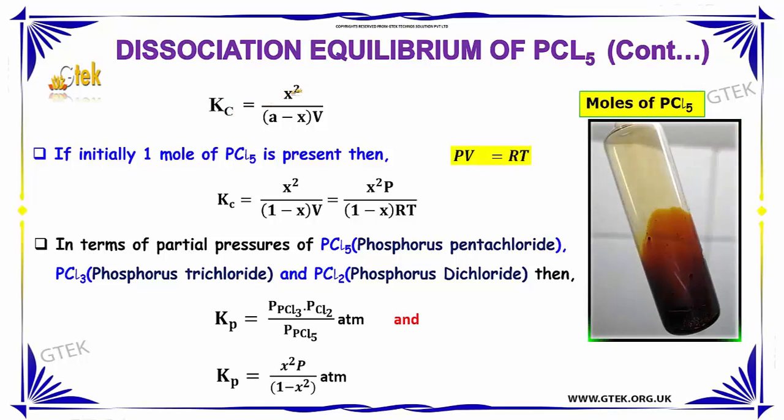Kc = X²/(A-X)V. If initially one mole of PCl₅ is present, then replacing A with 1, you get Kc = X²/(1-X)V. Since V is equal to...